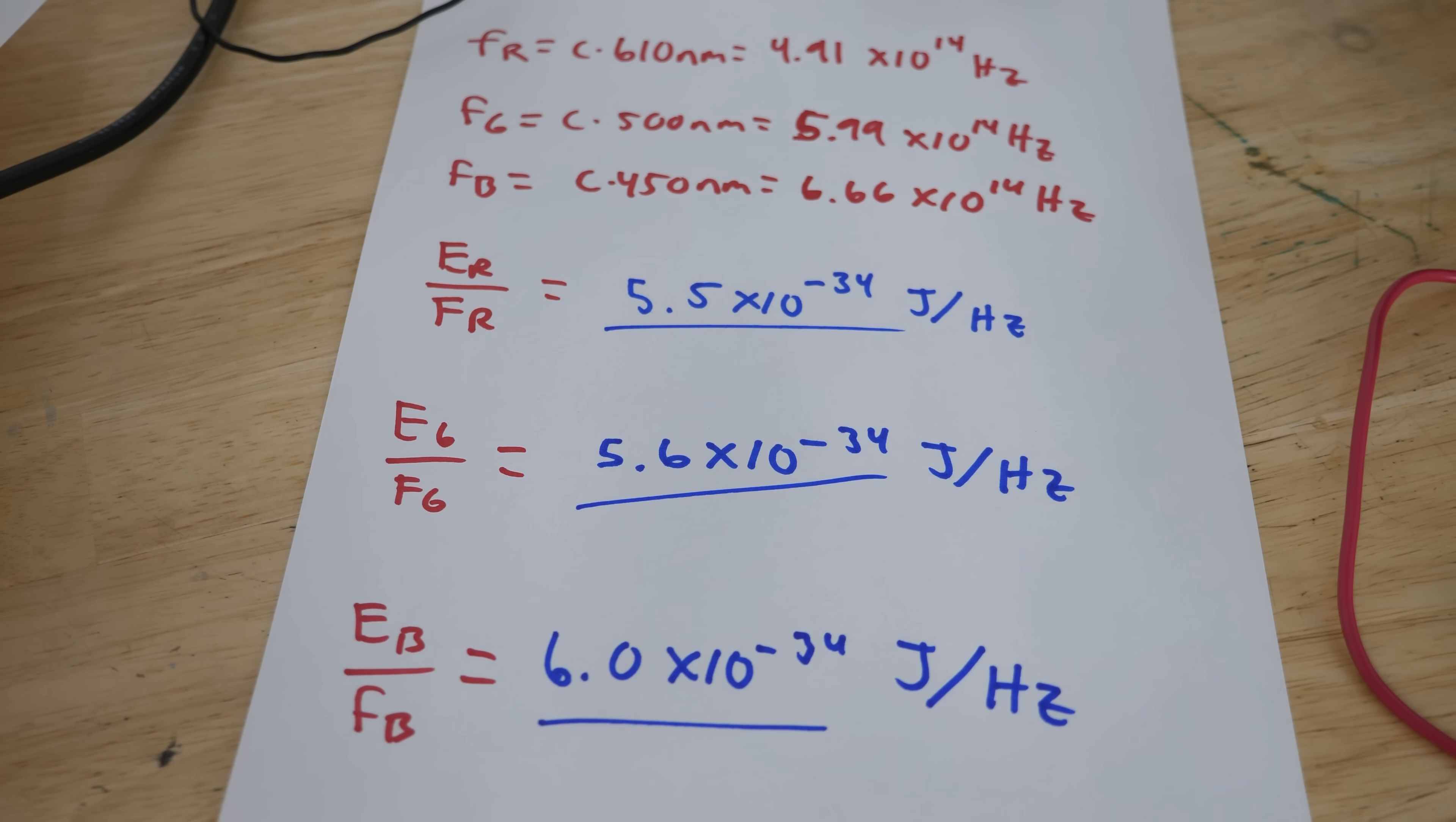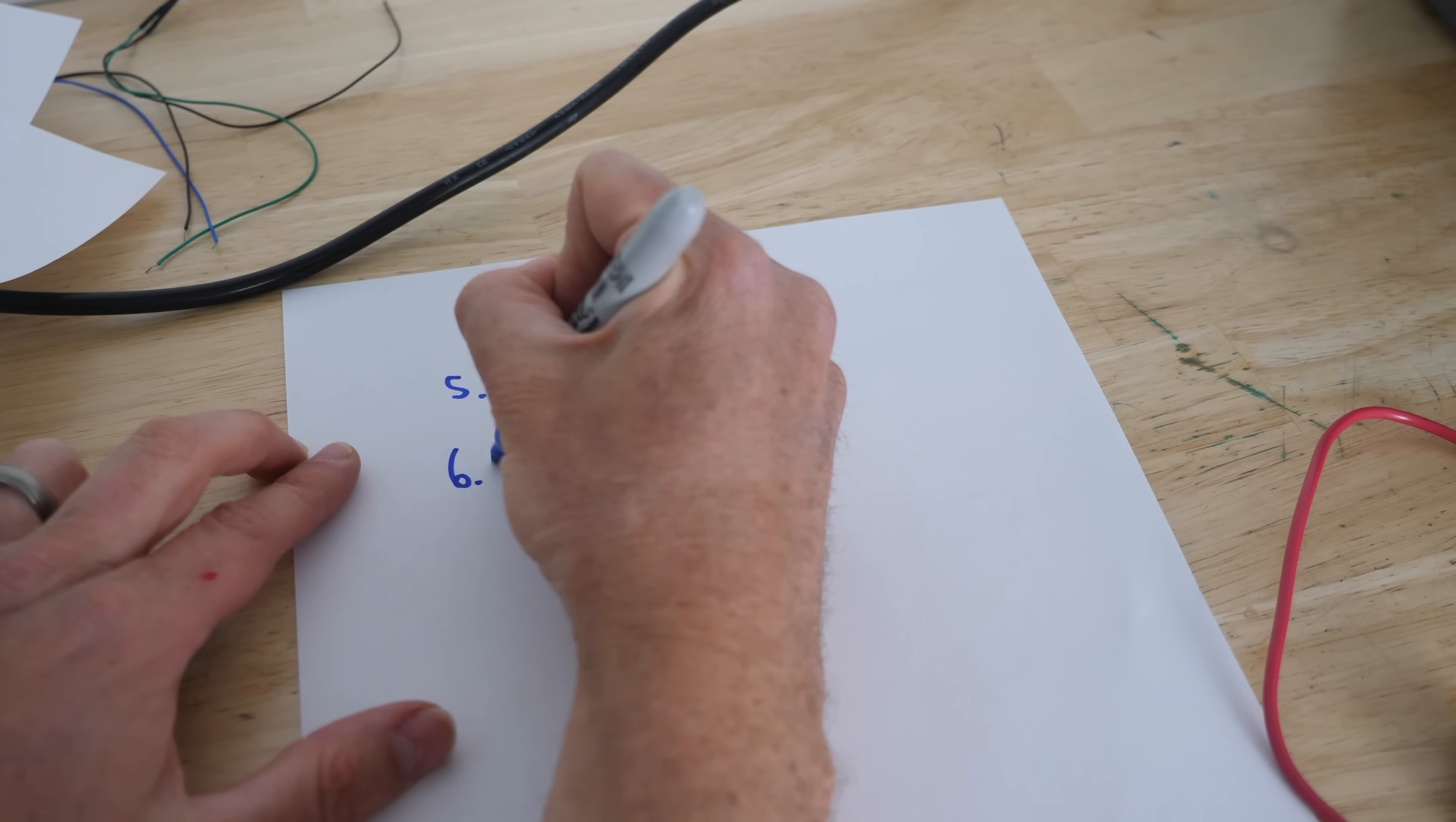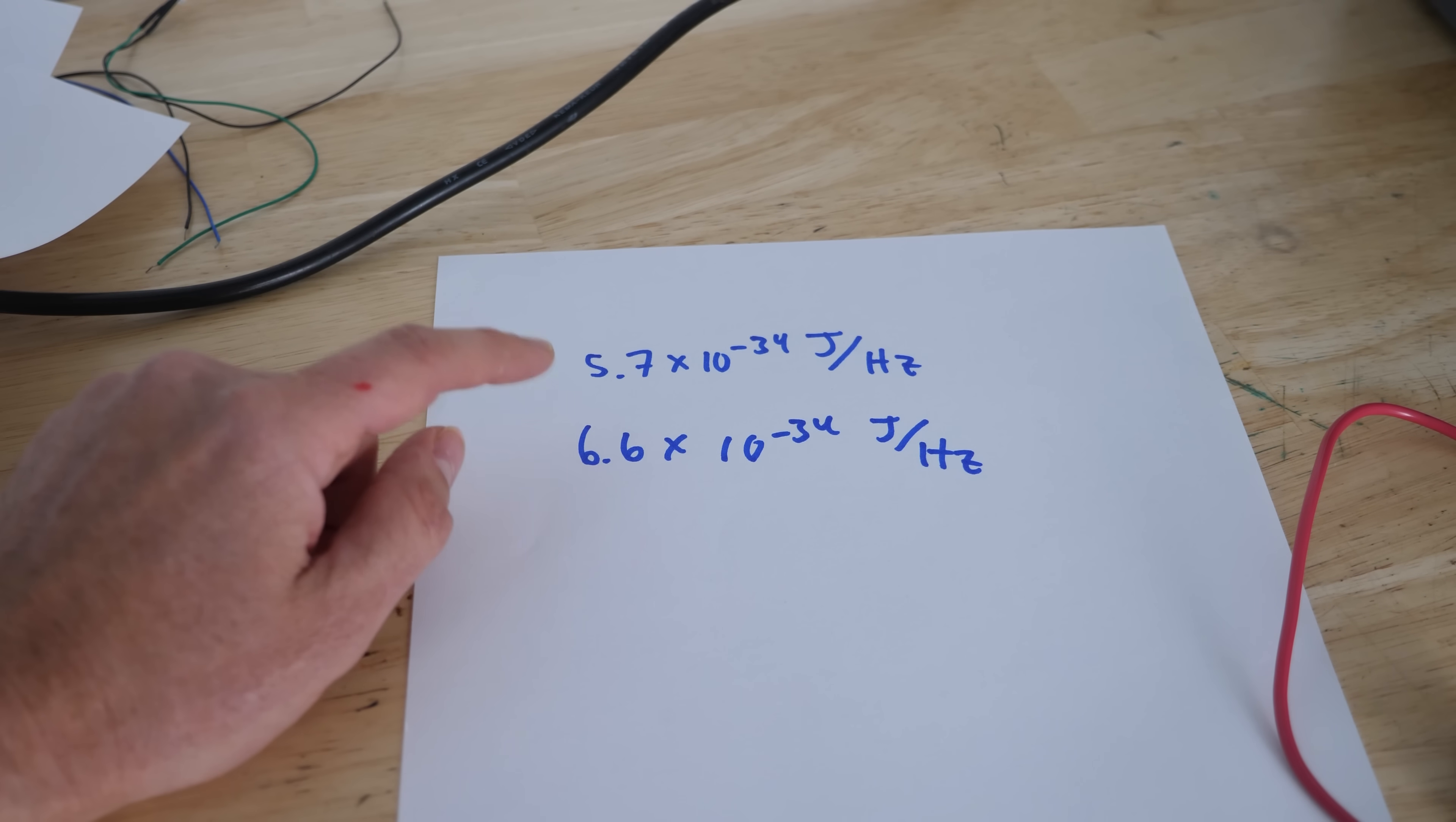If you look at all these numbers you get almost the exact same number each time. If I average these out I get 5.7 times 10 to the negative 34 joules per hertz. And guess what the real Planck's constant is. It's 6.6 times 10 to the negative 34 joules per hertz. With just these crude instruments we're able to calculate almost exactly Planck's constant.